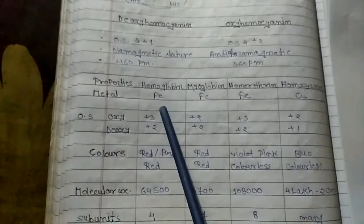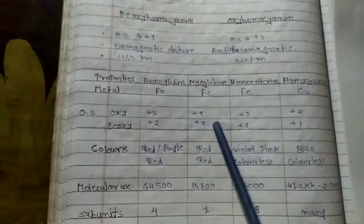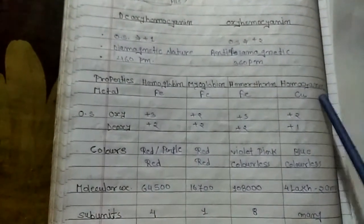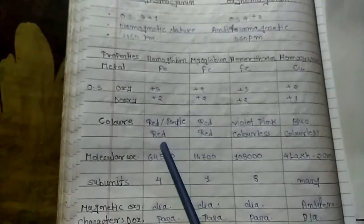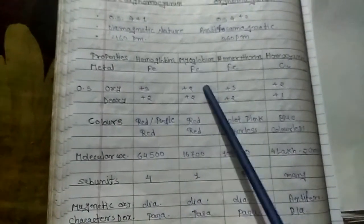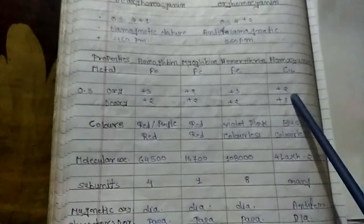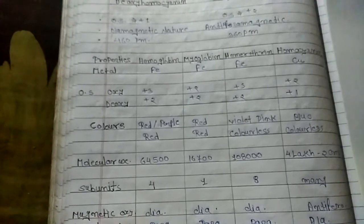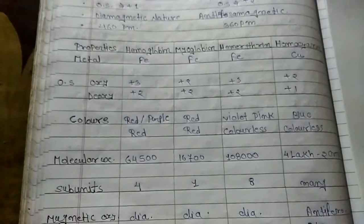For oxidation states: hemoglobin has oxy plus three and deoxy plus two, myoglobin has oxy plus two, hemerythrin in oxy form plus three and deoxy form plus two. For colors: hemoglobin is red or purple, myoglobin red, hemerythrin violet pink, and hemocyanin blue. For wavelengths: hemoglobin 64500, myoglobin 16700, hemerythrin 108000.